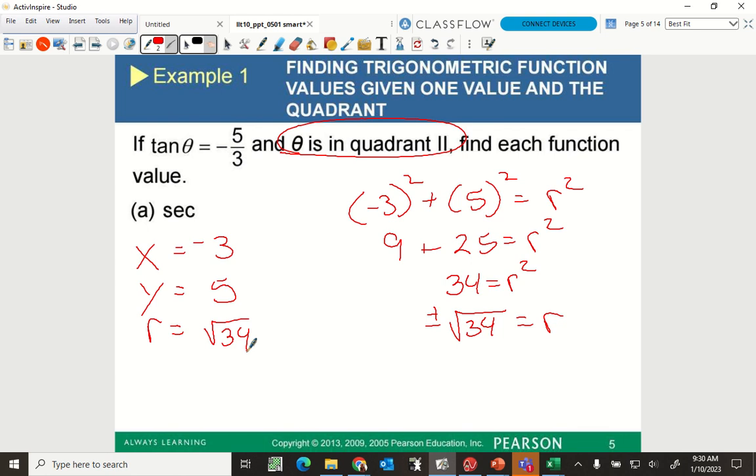So now that I have my x, y, and r, I can solve anything I need. So if I want to find the secant, if you have your unit circle, secant is what over what? What is secant? R over x. Very good. R over x. R over x. So secant of theta. My r value is going to be radical 34. My x value is negative 3. Make sense? Nonsense? Perfect sense, right? Good. Questions before I move on?